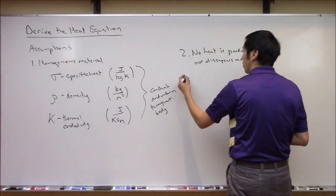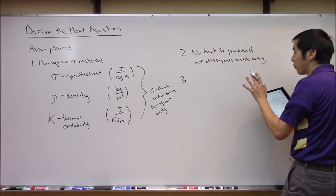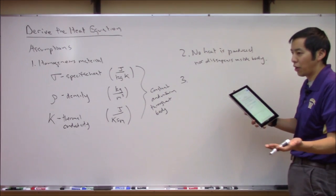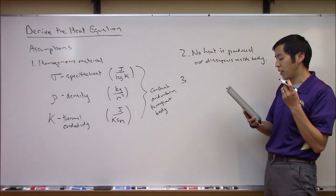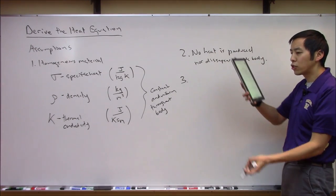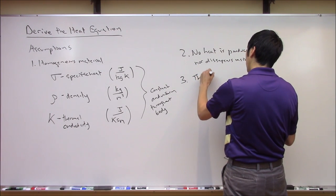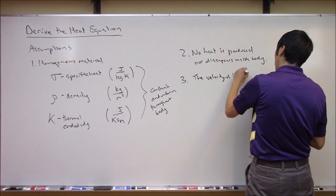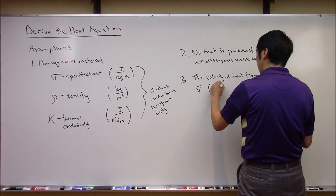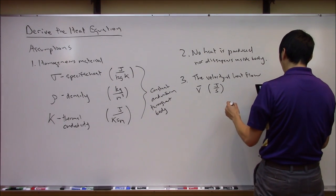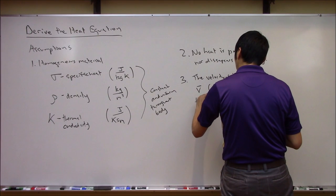Now for our third assumption. Experiments have shown that heat tends to flow in the direction of decreasing temperature — that's kind of a 'duh' thing — but the rate of heat flow is actually proportional to the gradient of the temperature. So the velocity of heat flow, denoted as vector V in units of joules per second, is proportional to the gradient of temperature.